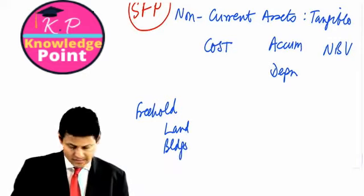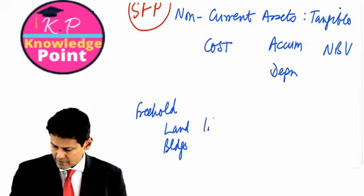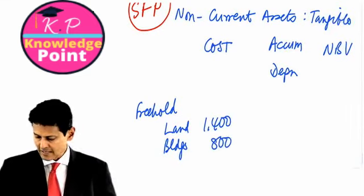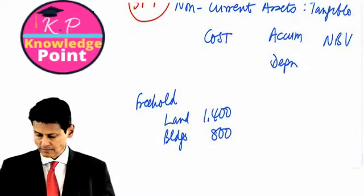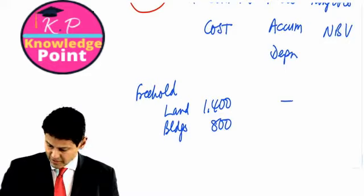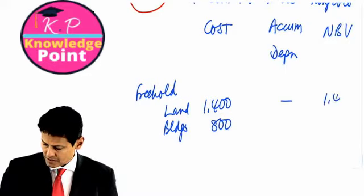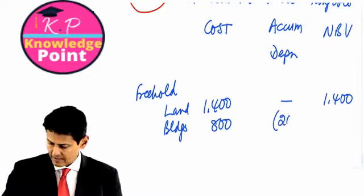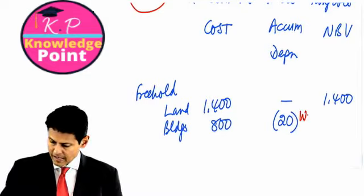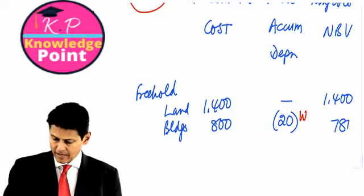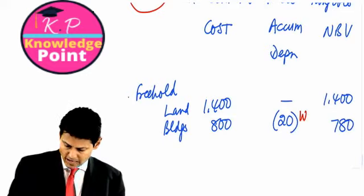We've got freehold land and buildings. The land appears to be 1,400. The buildings, a few minutes ago, stood at 800. The land is not depreciated, so the netbook value is the same as cost. The buildings, we decided to take away 20, as per workings just now. And so the netbook value is 780. So that's my freehold under control.